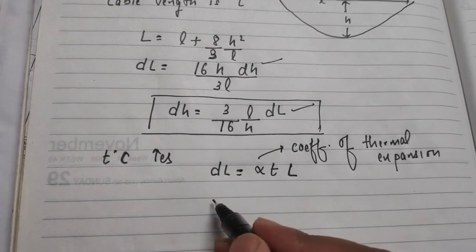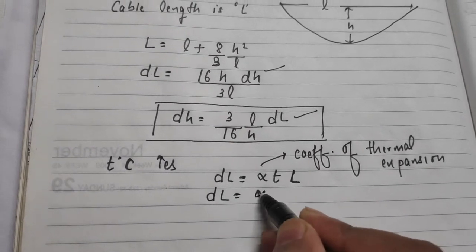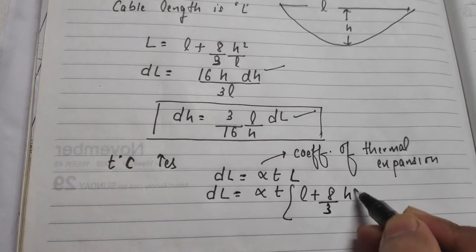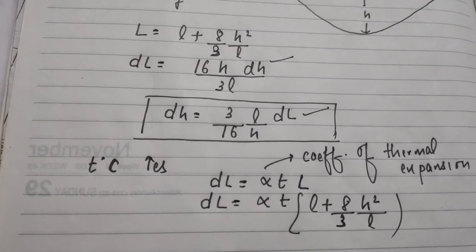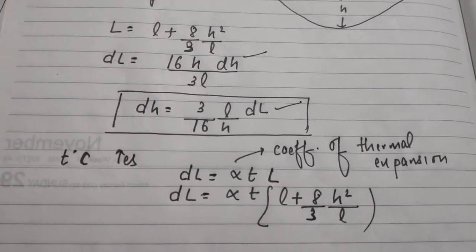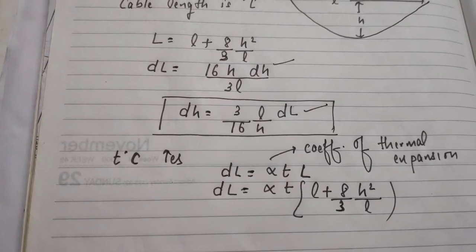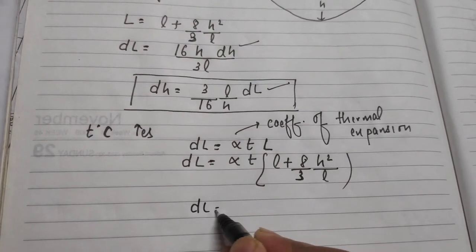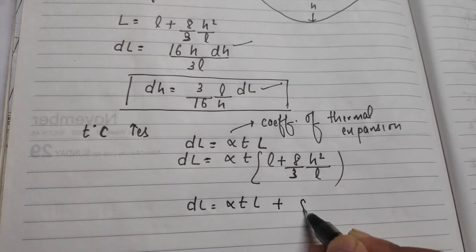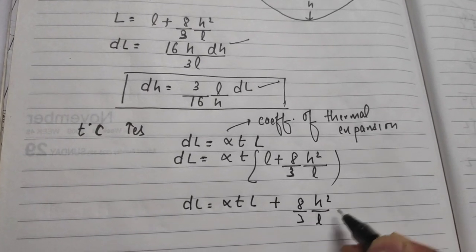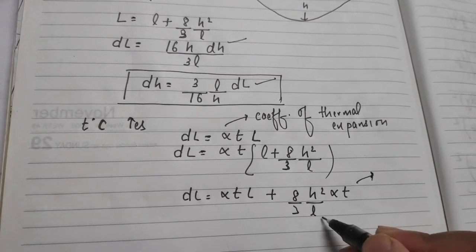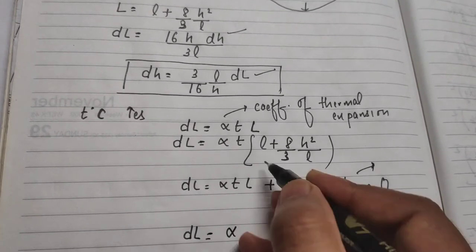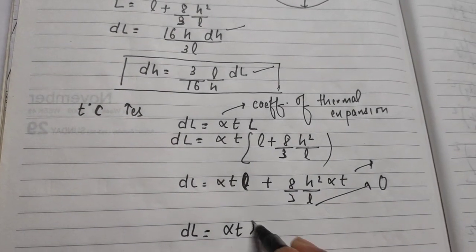So dL equals alpha × T × L. And we know that the total cable length L equals L plus (8/3)(H²/L). Therefore dL equals alpha × T × [L + (8/3)(H²/L)]. The second term (8/3)(H²/L) × alpha × T is a very small term, so we can neglect it. Thus dL is simply alpha × T × L.